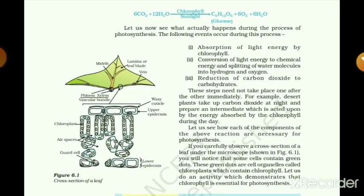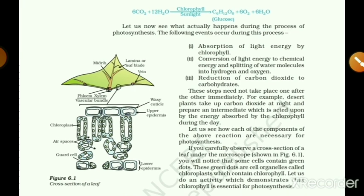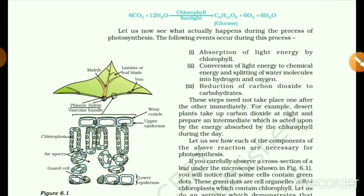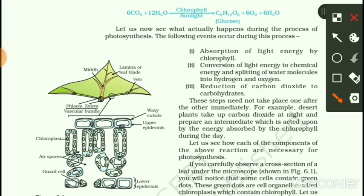Hello students, most welcome to these video lectures about photosynthesis. In the process of photosynthesis, you will know that green plants use carbon dioxide, water, and chlorophyll with sunlight to produce food, which is glucose. As a by-product, oxygen is also created.